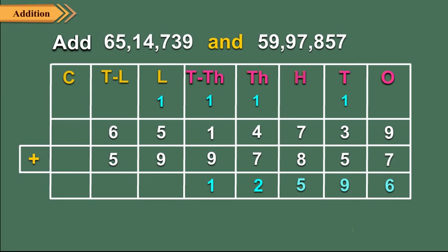Step 7: Now add the digits at the lakhs place. 1 lakh carried forward, plus 5 lakhs plus 9 lakhs is equal to 15 lakhs, which is equal to 1 ten lakh plus 5 lakhs. So we write 5 in the lakhs column and carry forward 1 to the ten lakhs column.